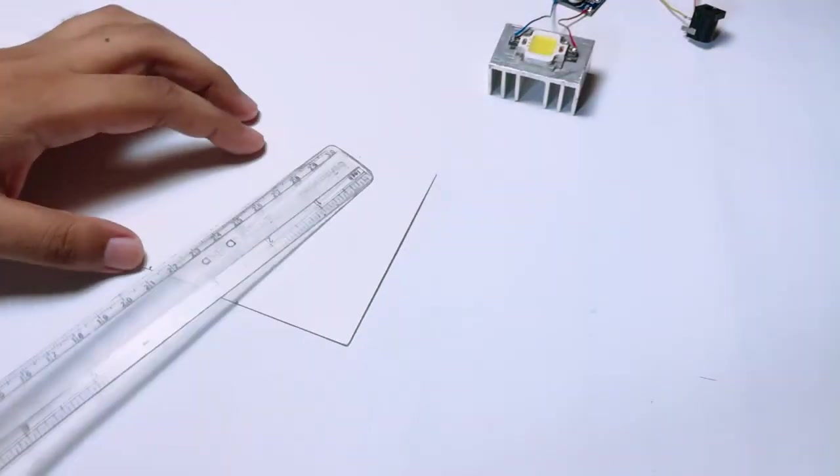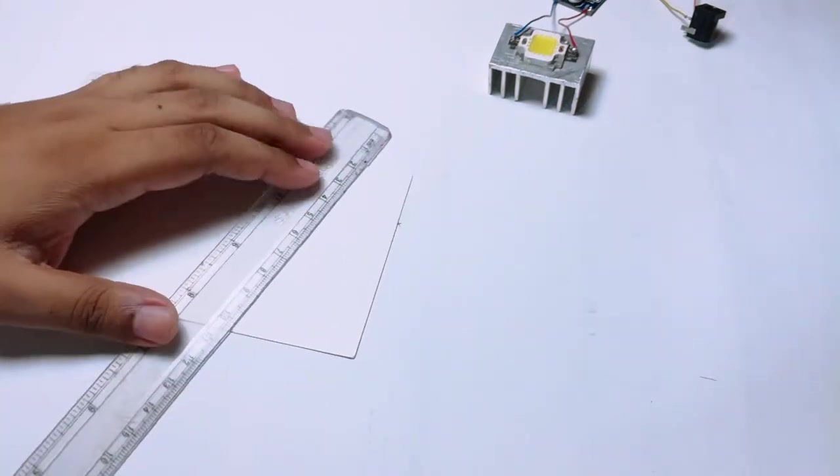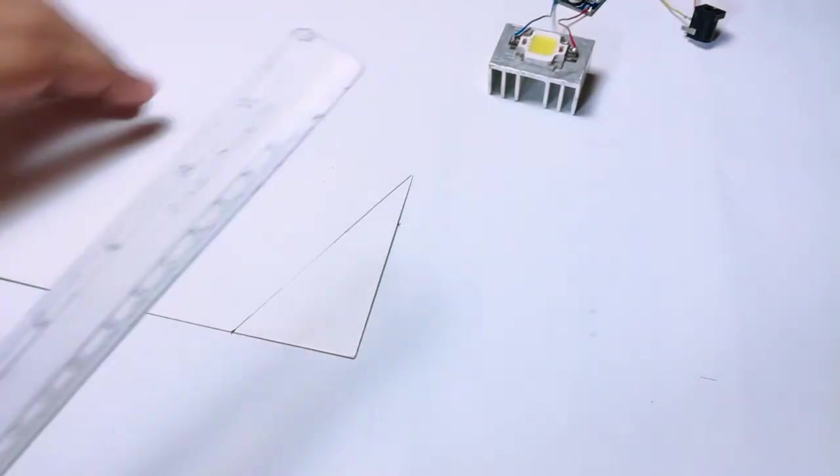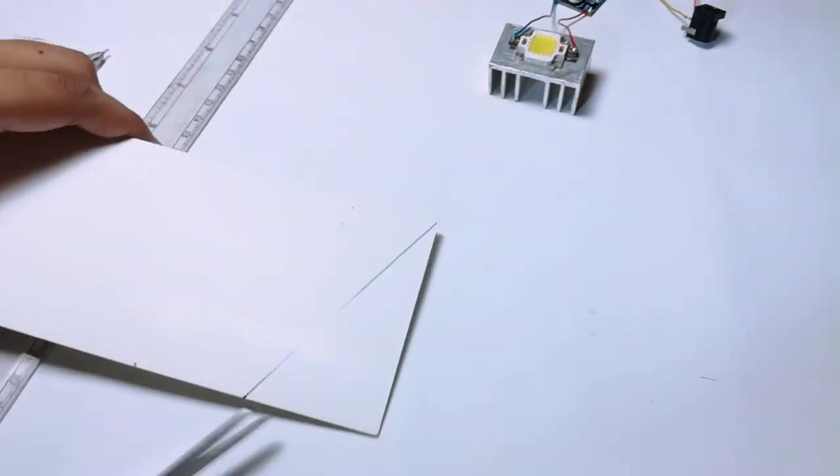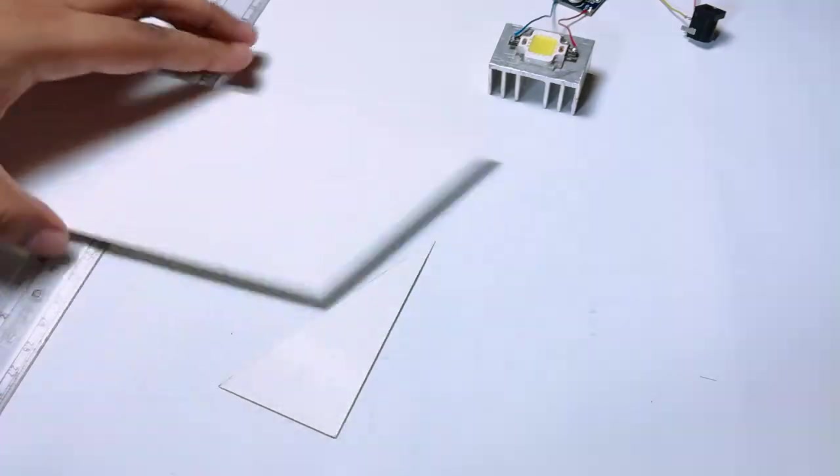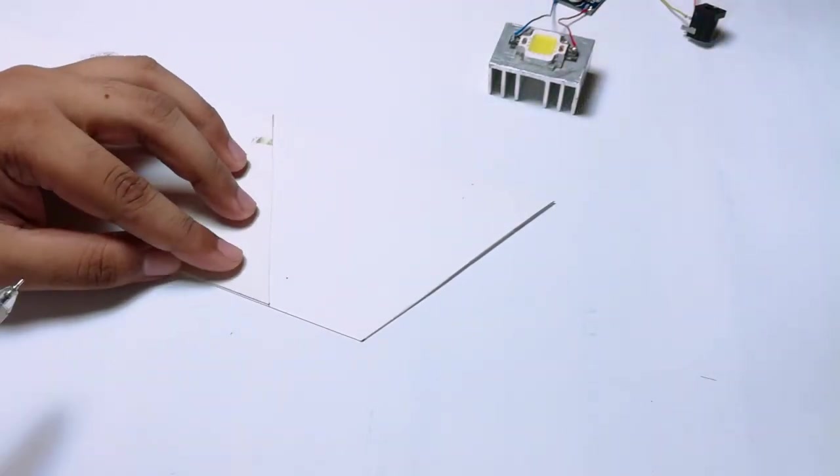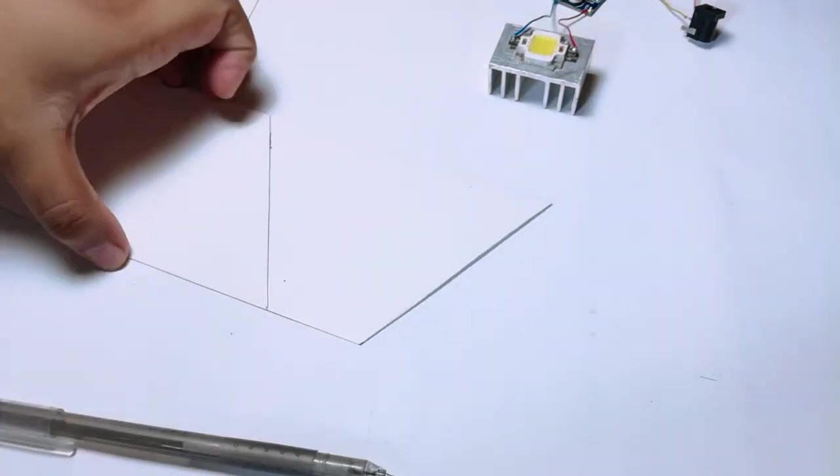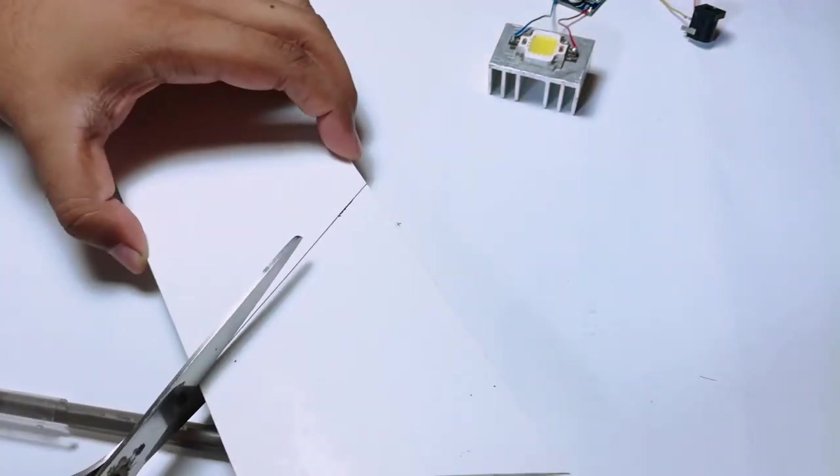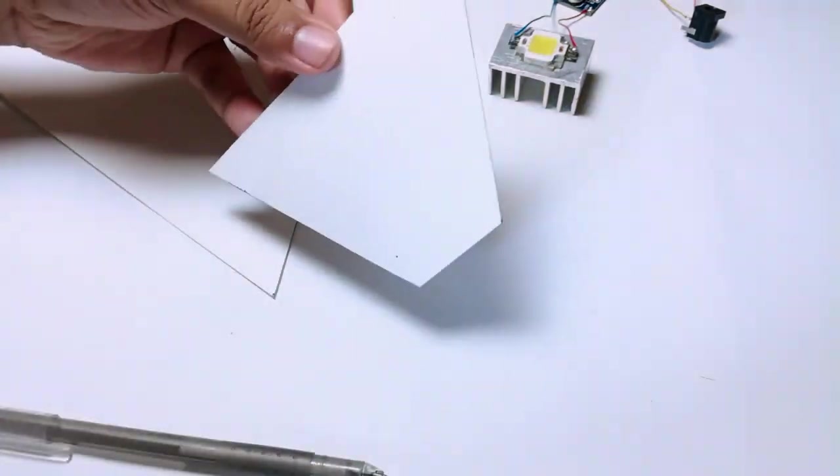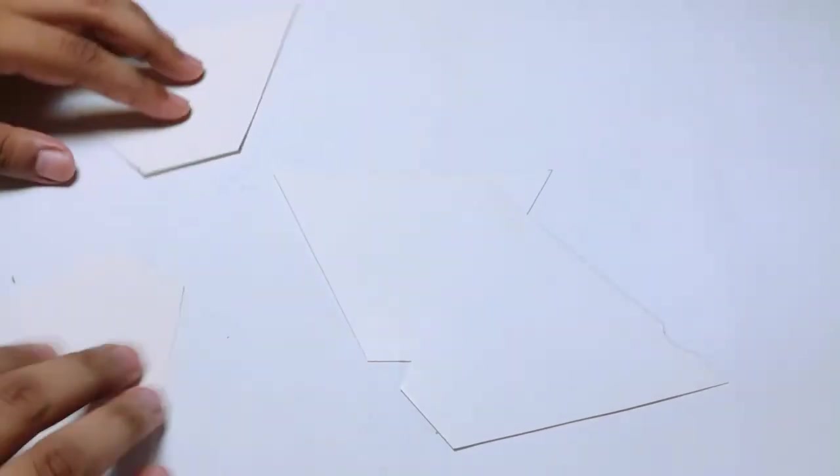I'm going to cut 2-millimeter cardboard to make a reflector or holder for this light. I will cut 4 pieces of this shape to make the reflector.